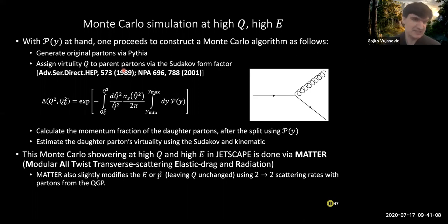So the idea is that you generate a random number, and you compare that random number to a value of q squared, and once they match up you can assign a particular q squared to the parent parton. And the way that this is done essentially in matter is to not leave the energy alone and modify the three momentum, so shrink the three momentum to be able to assign the virtuality.